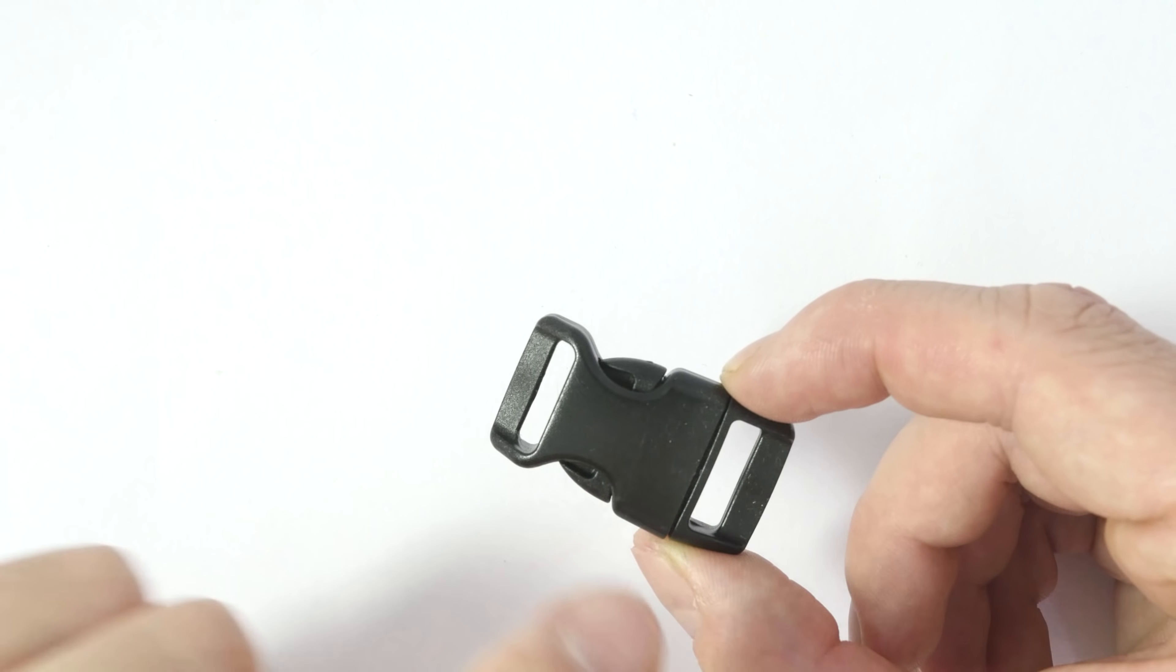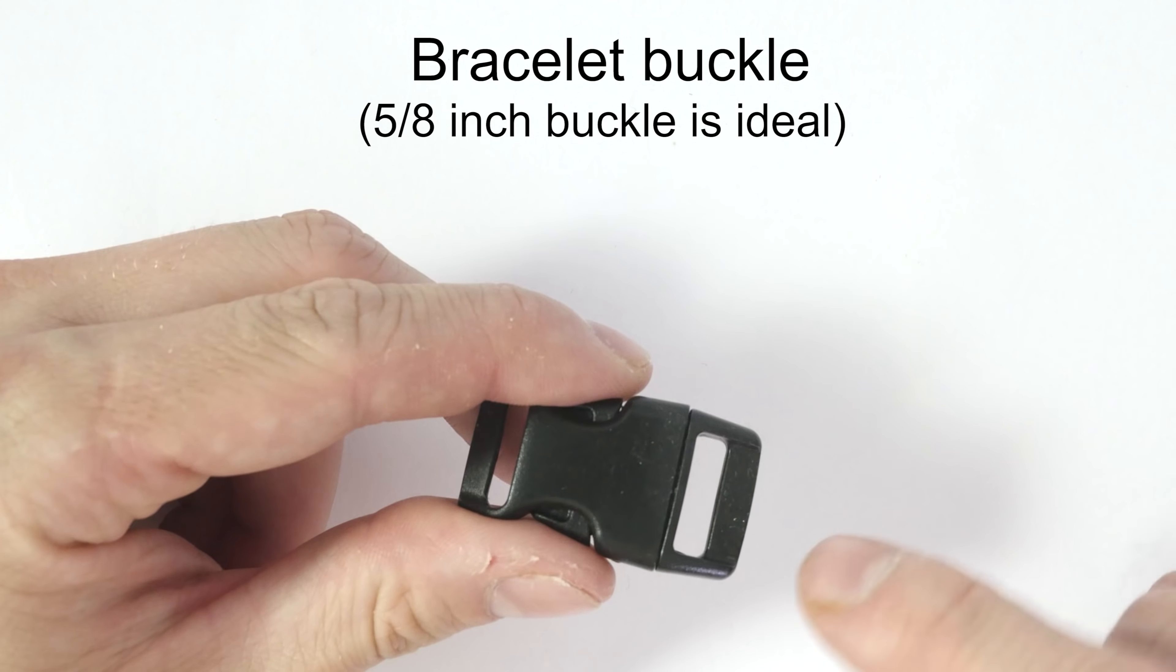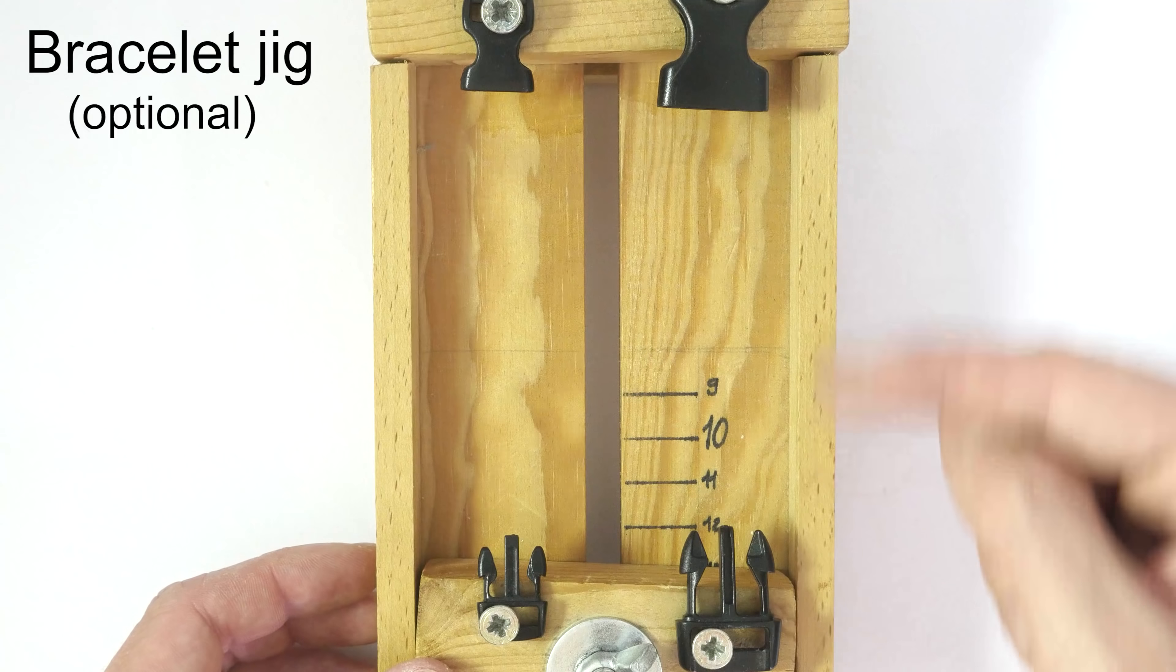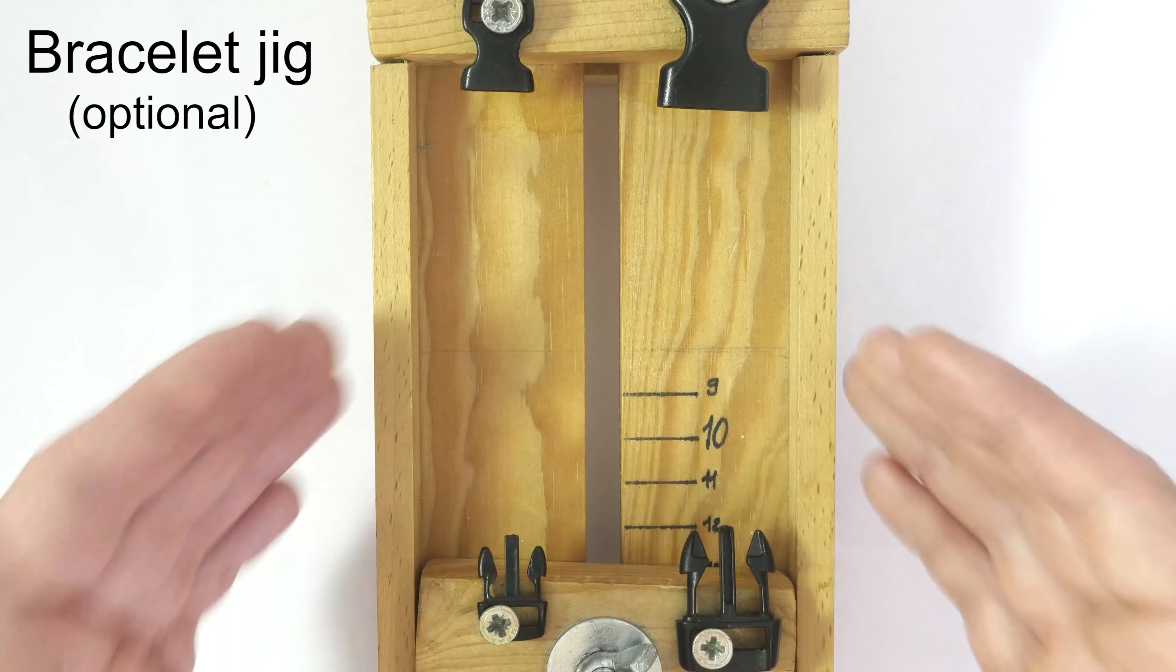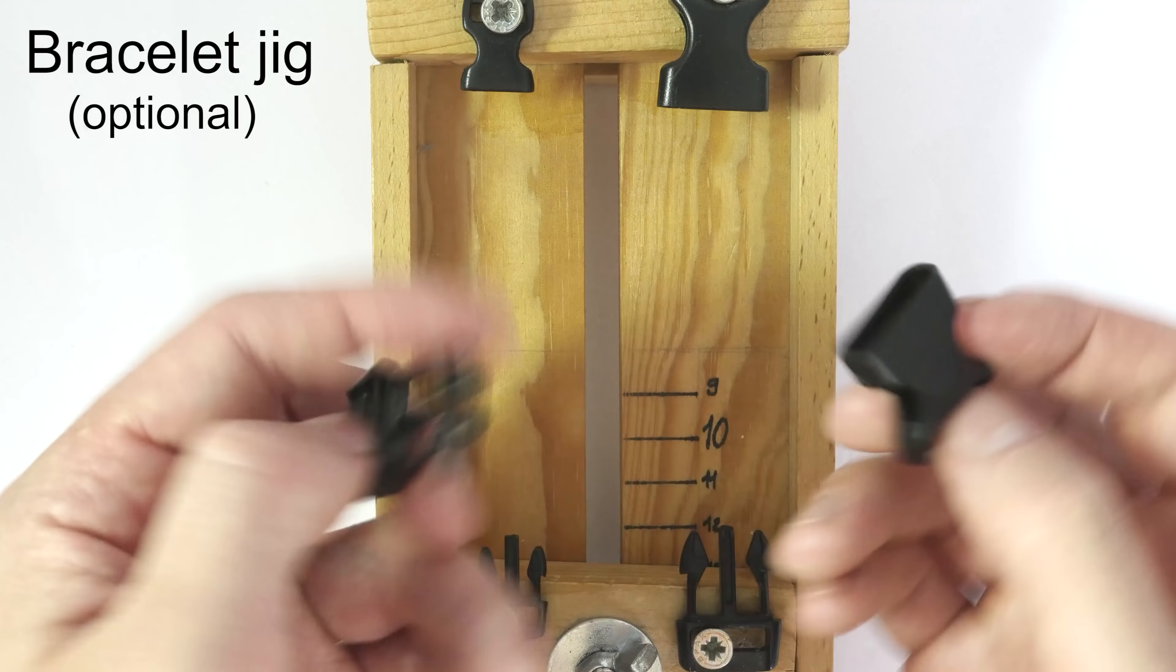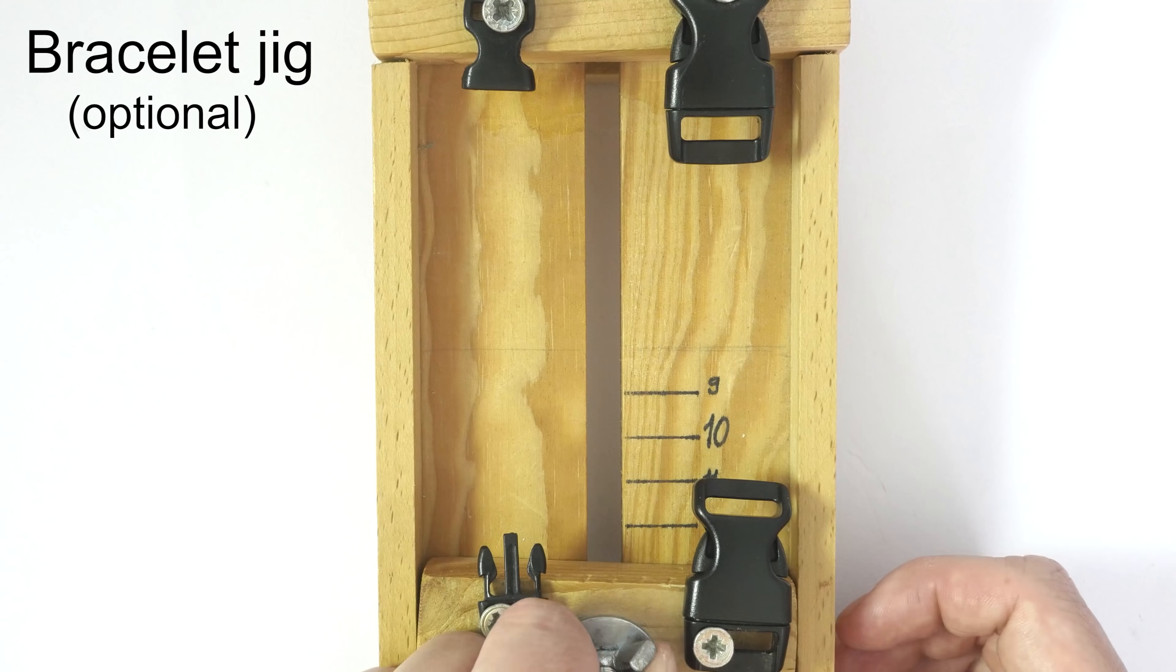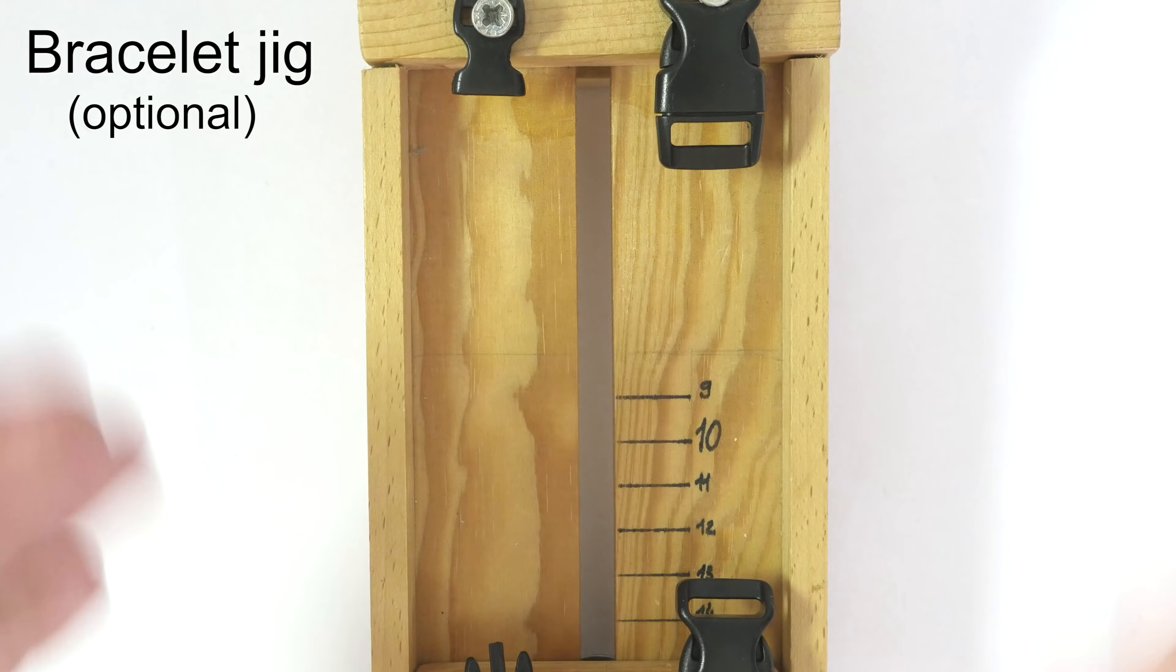Since we're doing a buckle version of the bracelet, we're going to need a buckle. The buckle that I'm going to be using is 5 eighths of an inch in width. For demonstrating the tying process of this bracelet, I'm going to hook it into a bracelet jig. A bracelet jig is not absolutely required, but it makes things easier to see. I'm going to take my buckle and fixate it onto the jig. I'm going to adjust the length for my bracelet. And with this, our jig is ready for the tying of our bracelet.